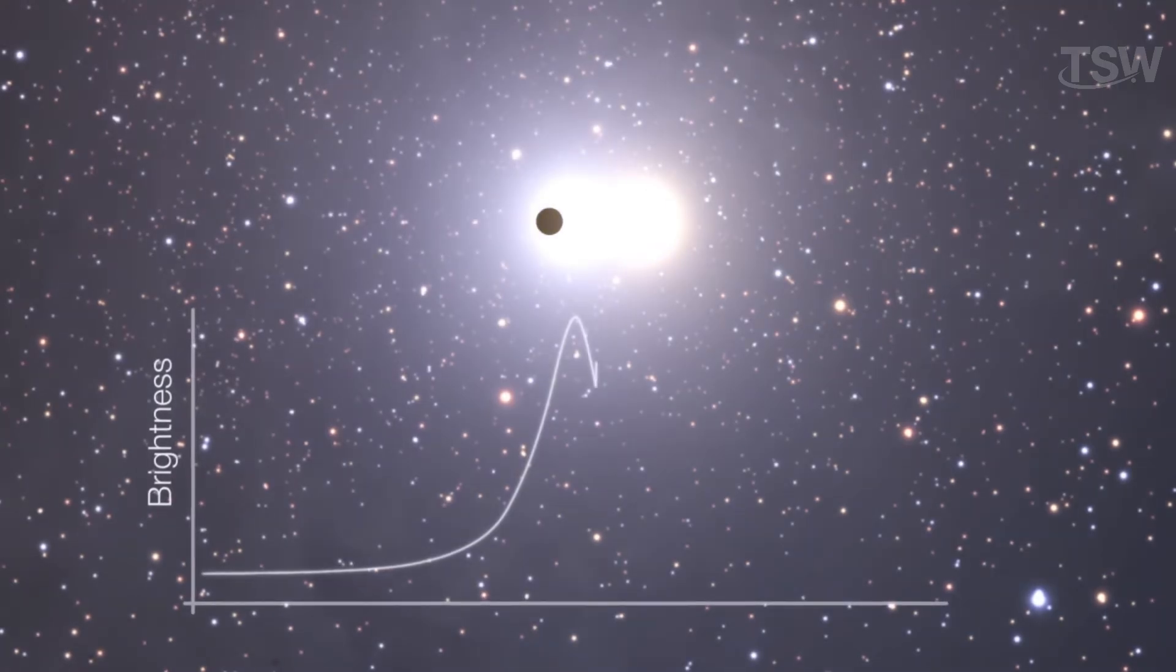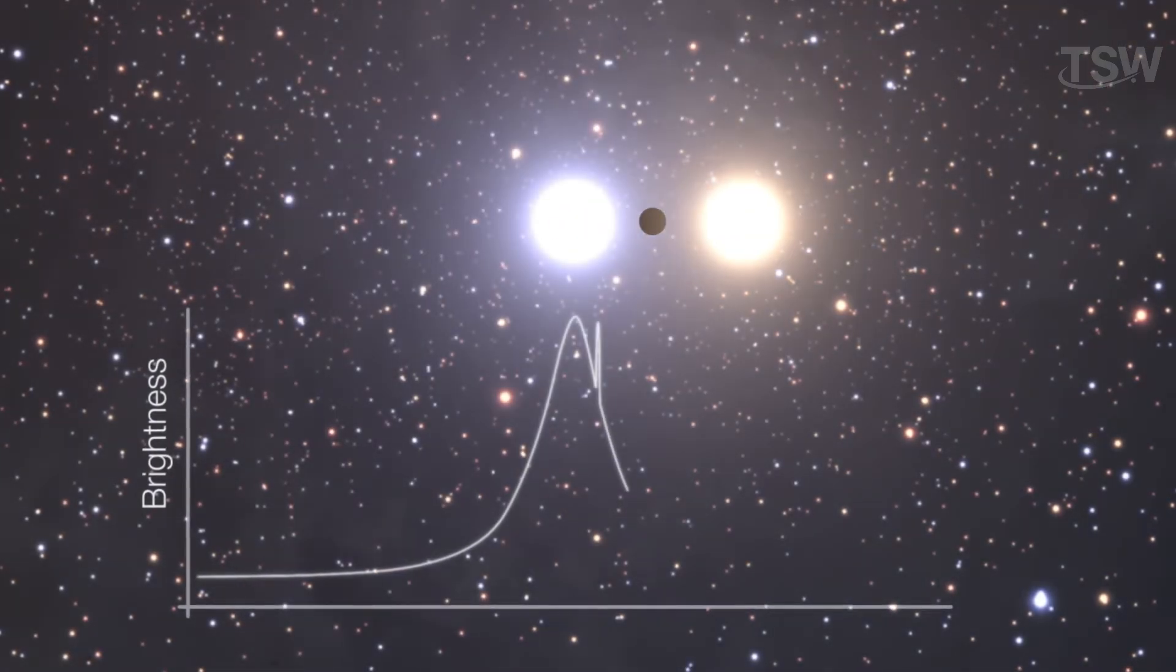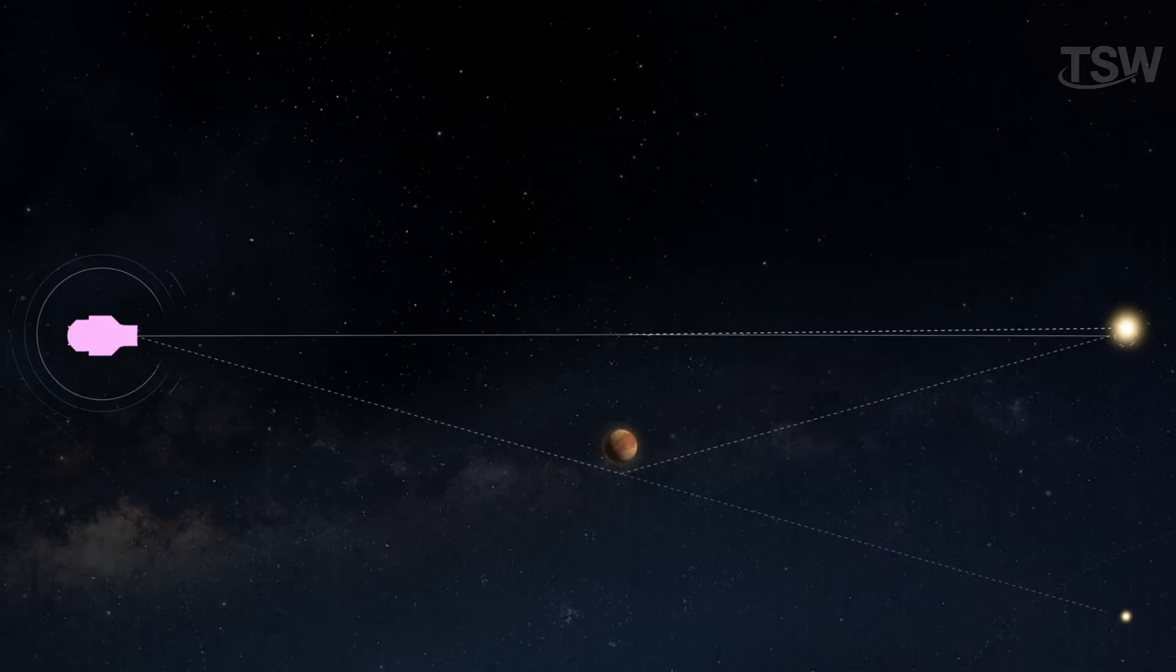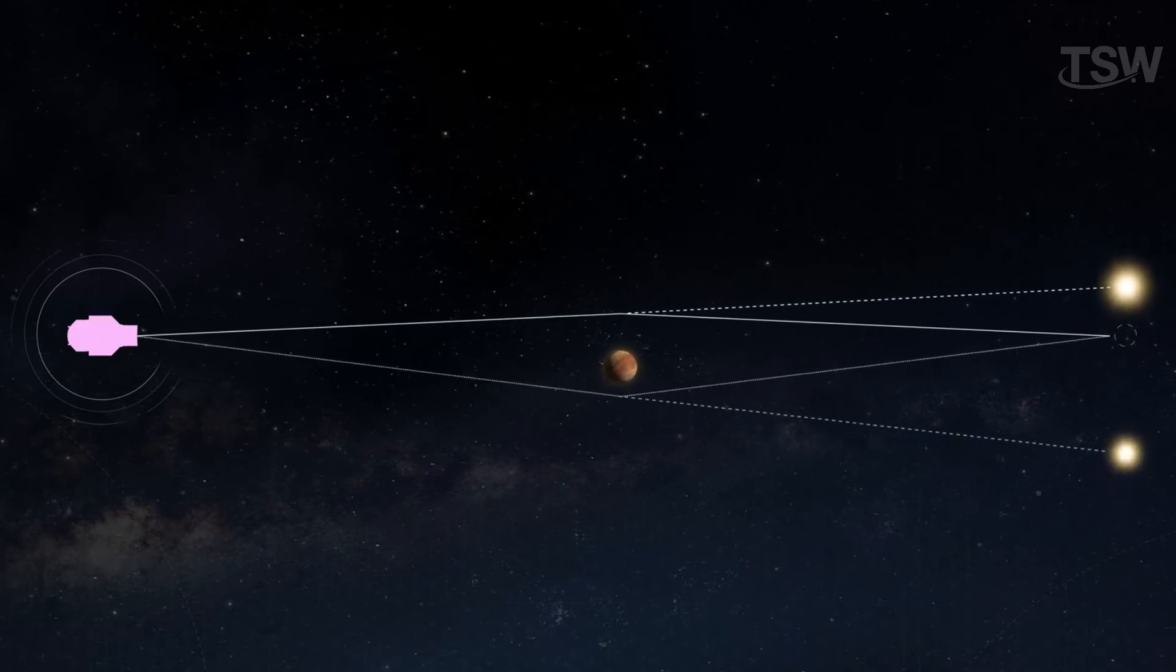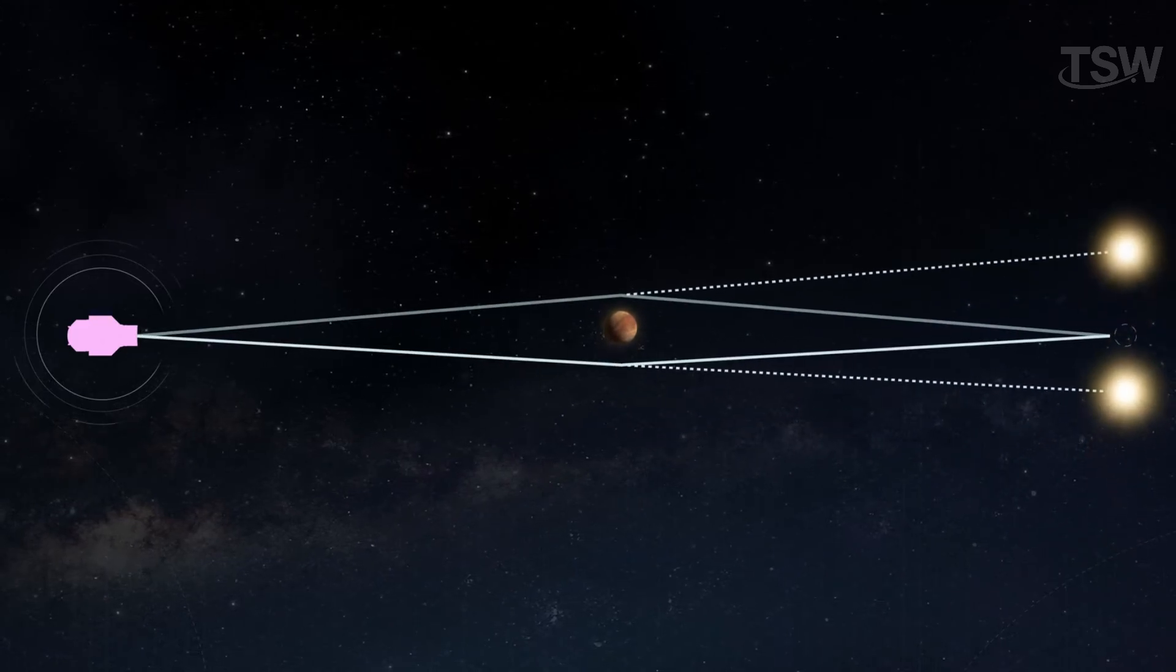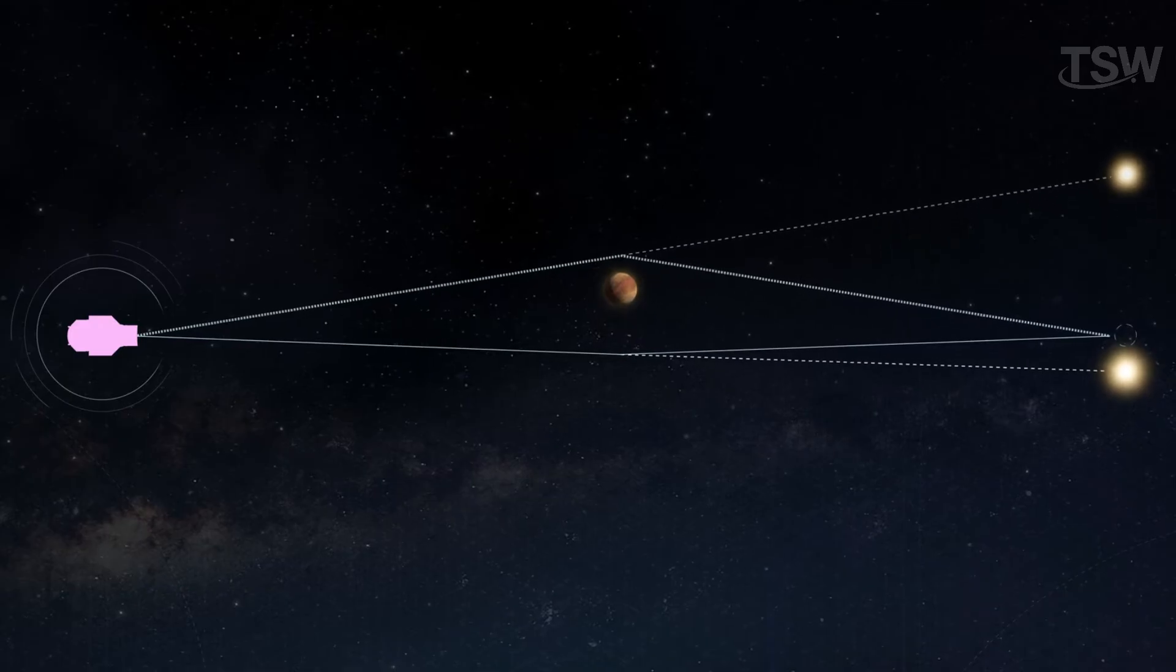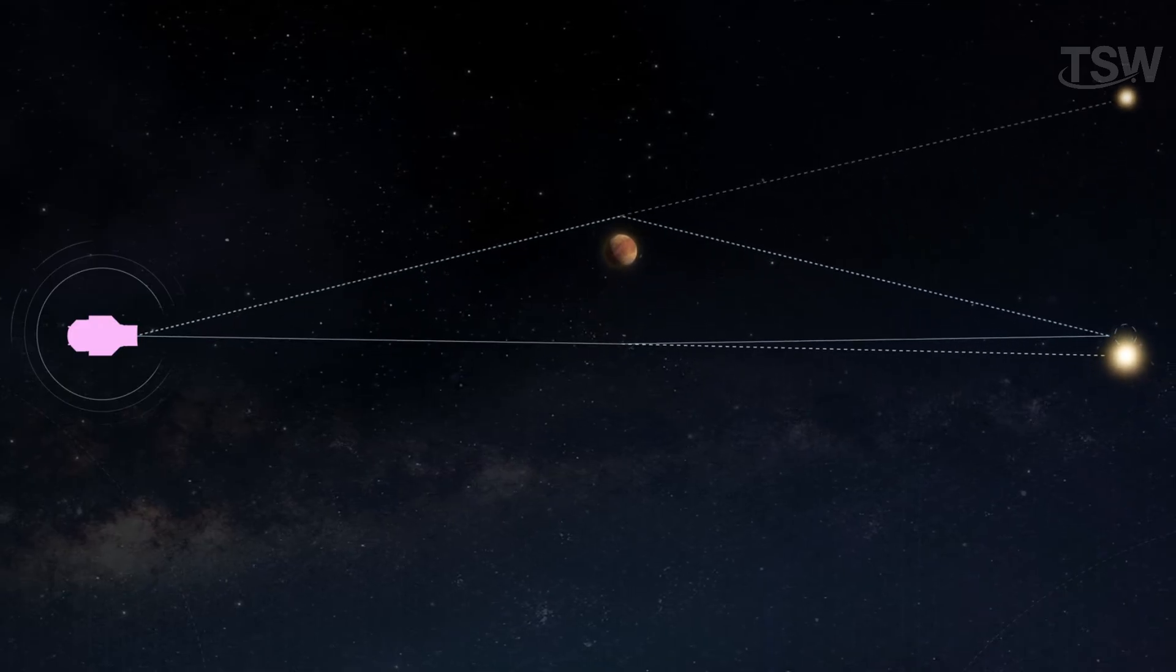It's like someone passing a magnifying glass right in front of a flashlight. And if that foreground star has a planet orbiting around it, that planet can also cause a slight additional distortion in the observed brightness. Detecting this second variation allows scientists to identify the presence of the planet.